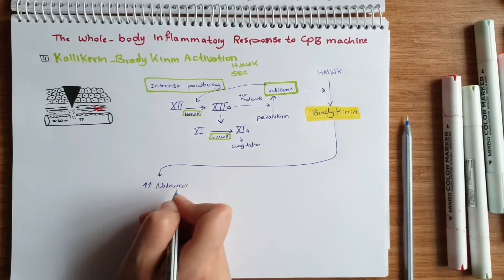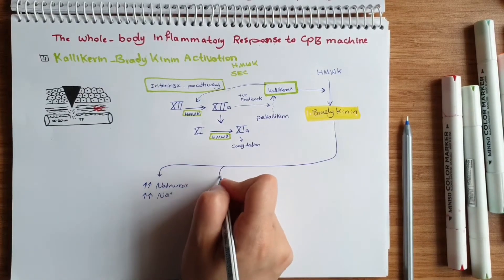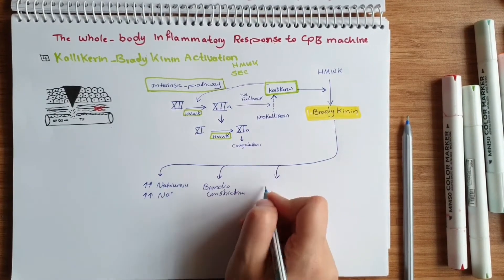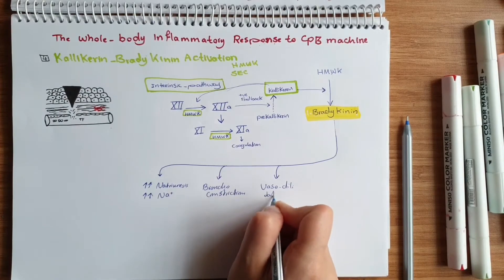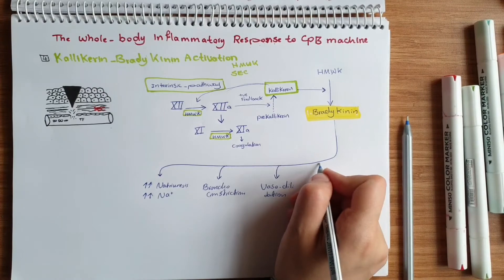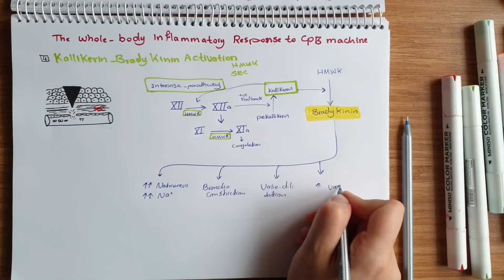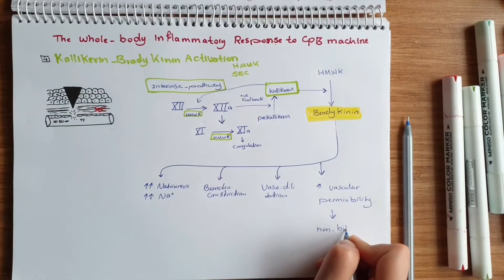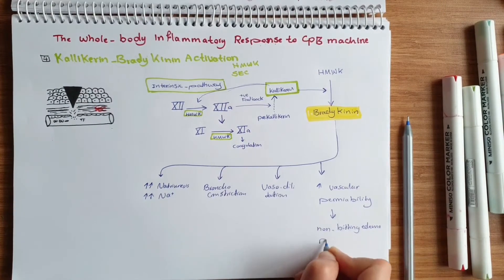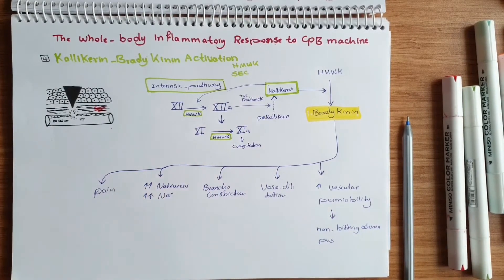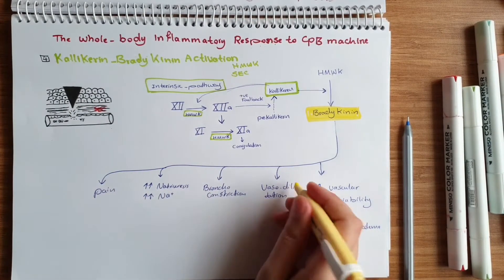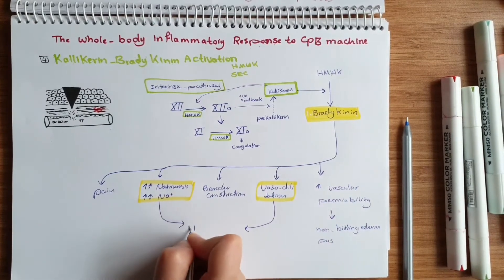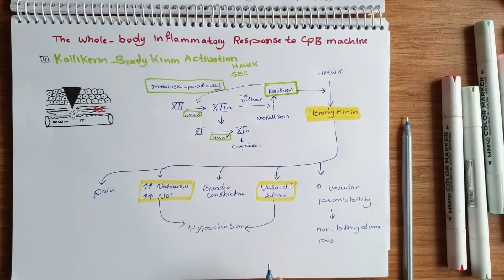Bradykinin produced during the cardiopulmonary bypass machine has many effects. It increases natriuresis and causes bronchoconstriction. Another effect is that it increases vascular permeability and causes vasodilation. Bradykinin also increases pain sensation. When there is increased vascular permeability there is non-pitting edema, and when there is trauma it will cause pus formation. When there is vasodilation and increased natriuresis, that causes hypotension — which is why some patients after this machine operation will have hypotension.